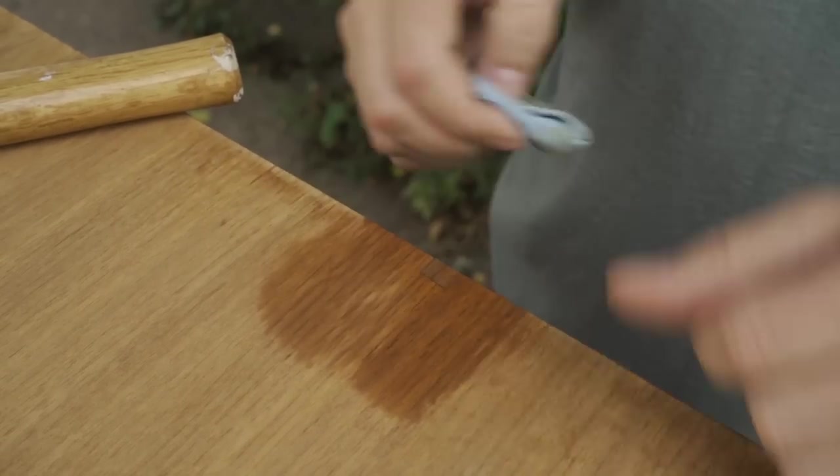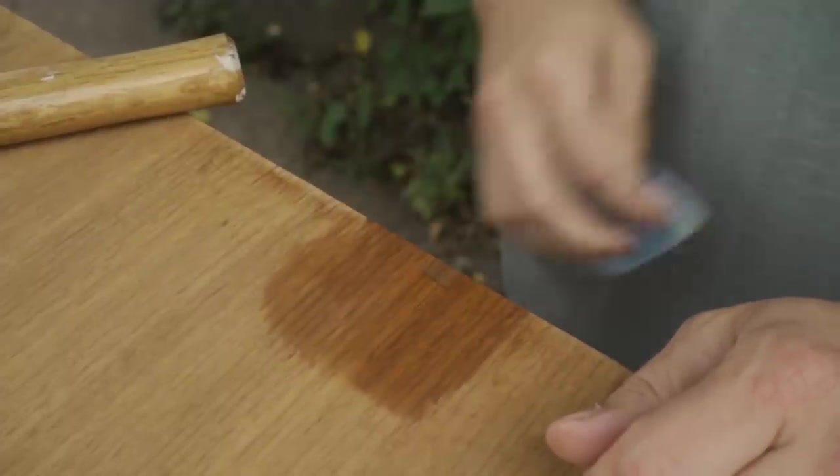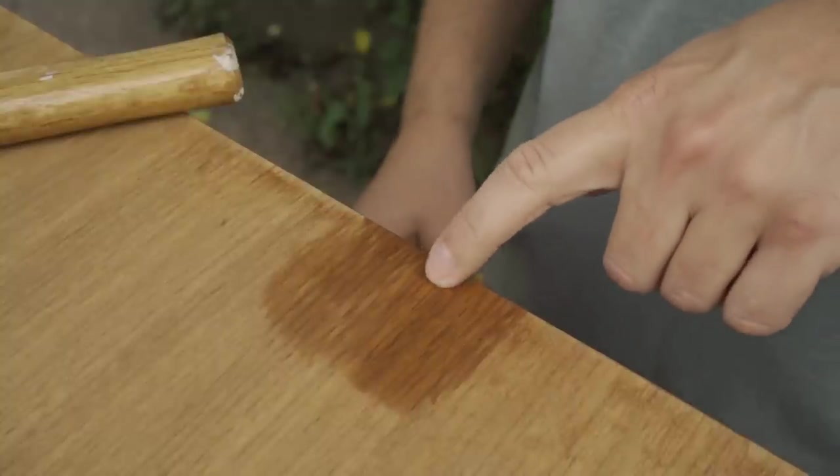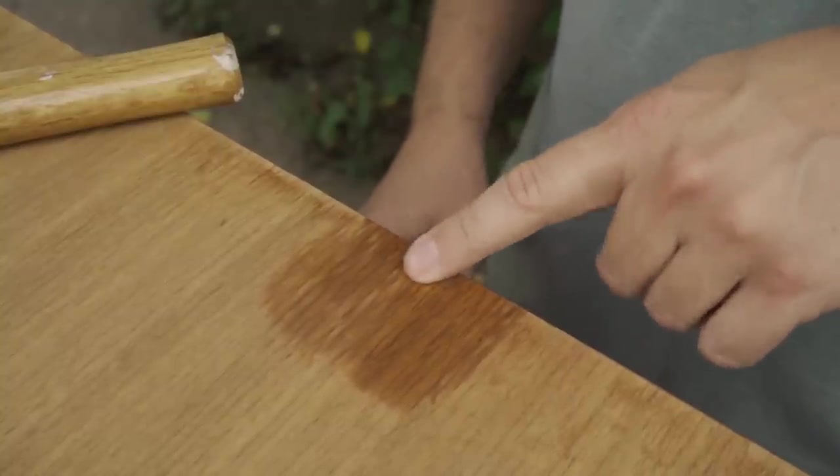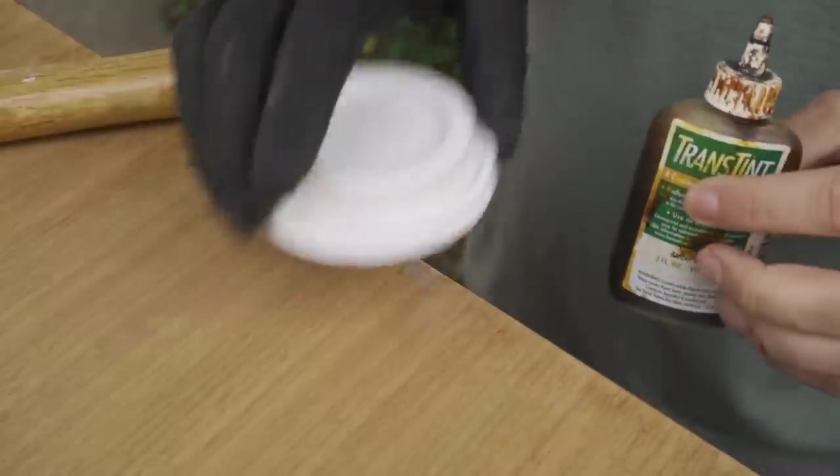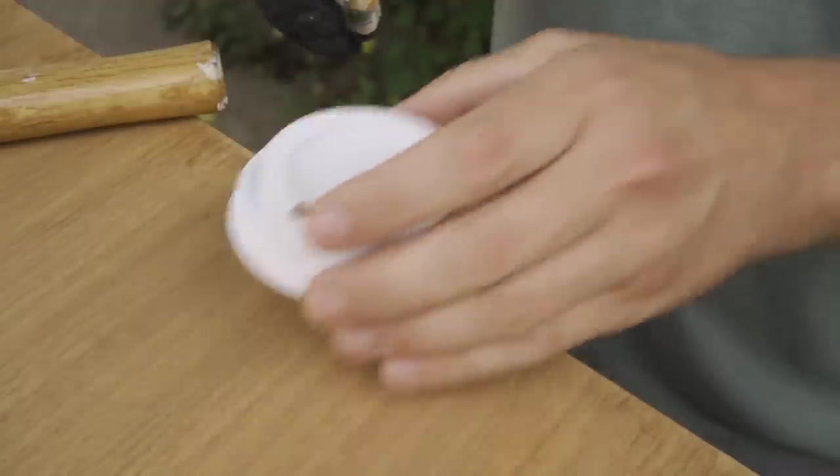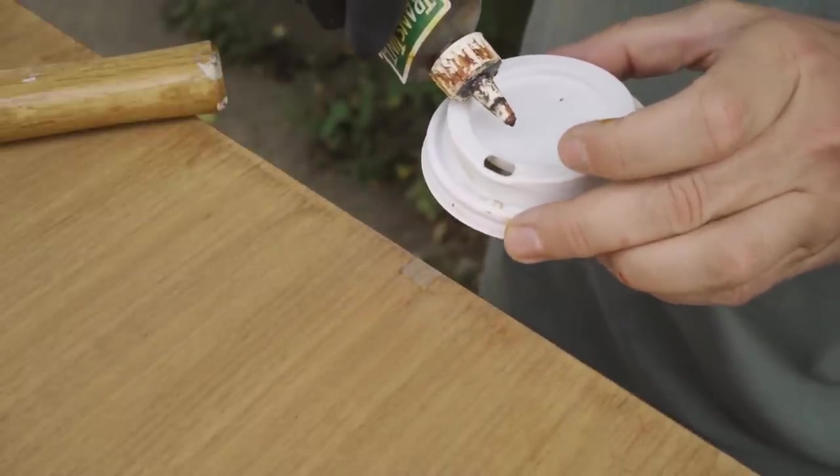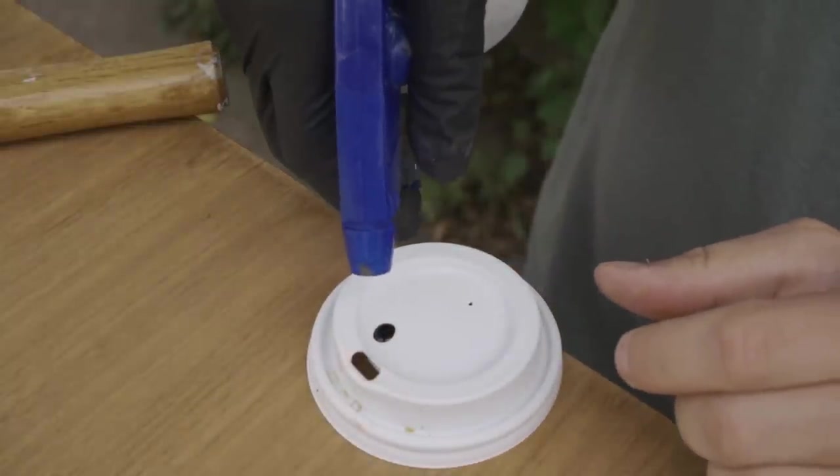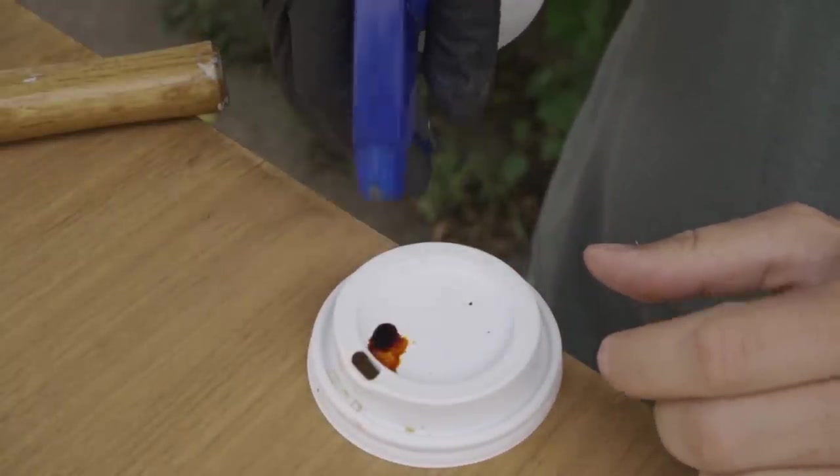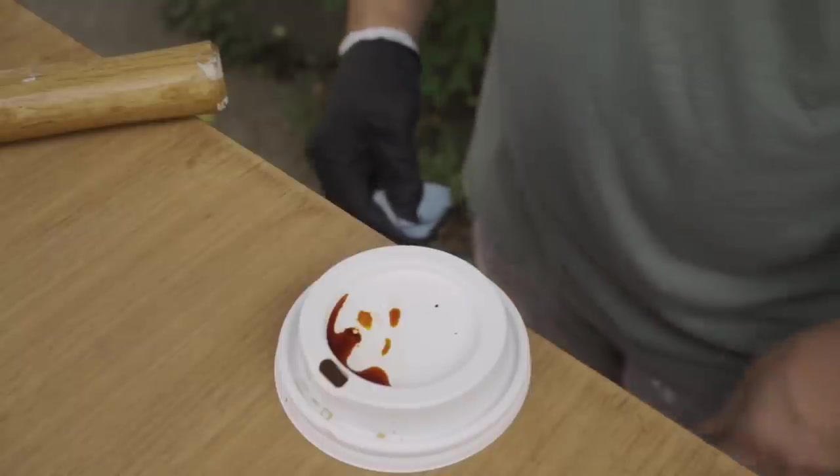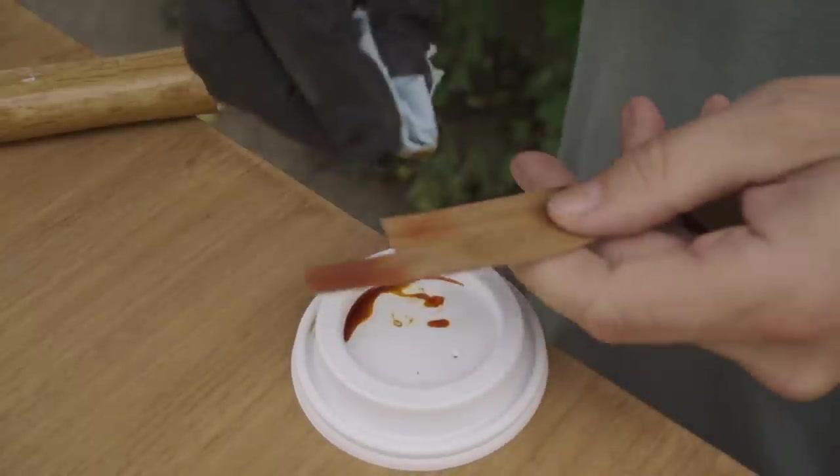And now it looks too brown, too dark. Probably because when I scraped it down I cut through the color that was on the top. So I could either take it out and do it again or try to color it. I think I'll first try to color it. So I've got some amber dye here. And I'm just going to put a little drop in this lid and a drop or so of water.